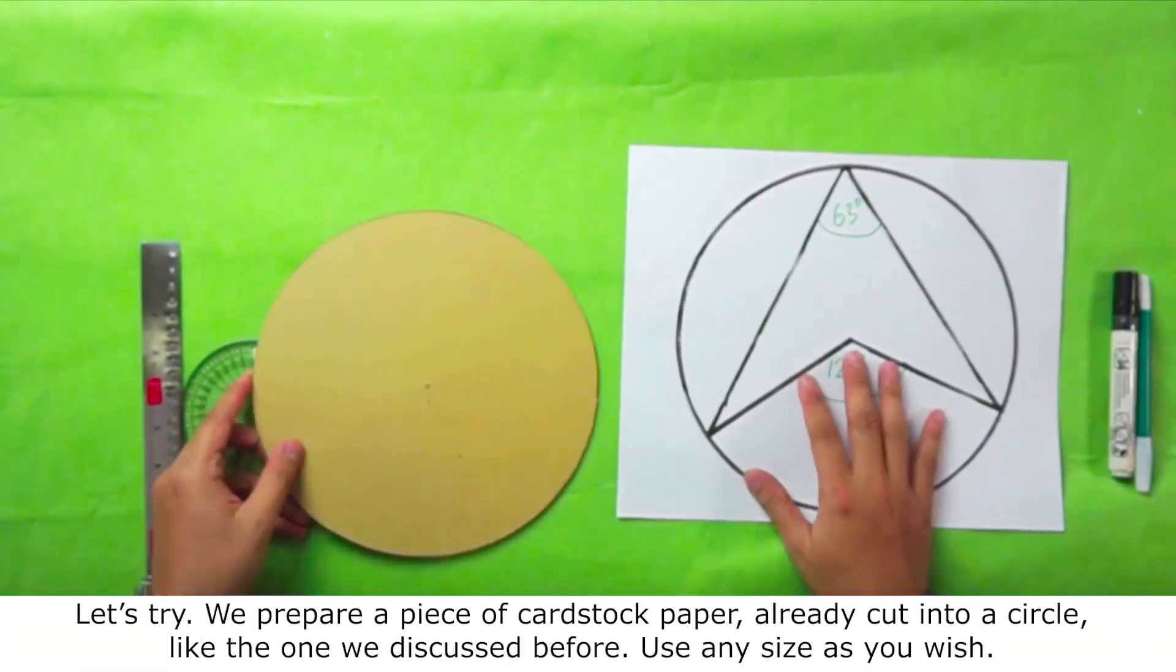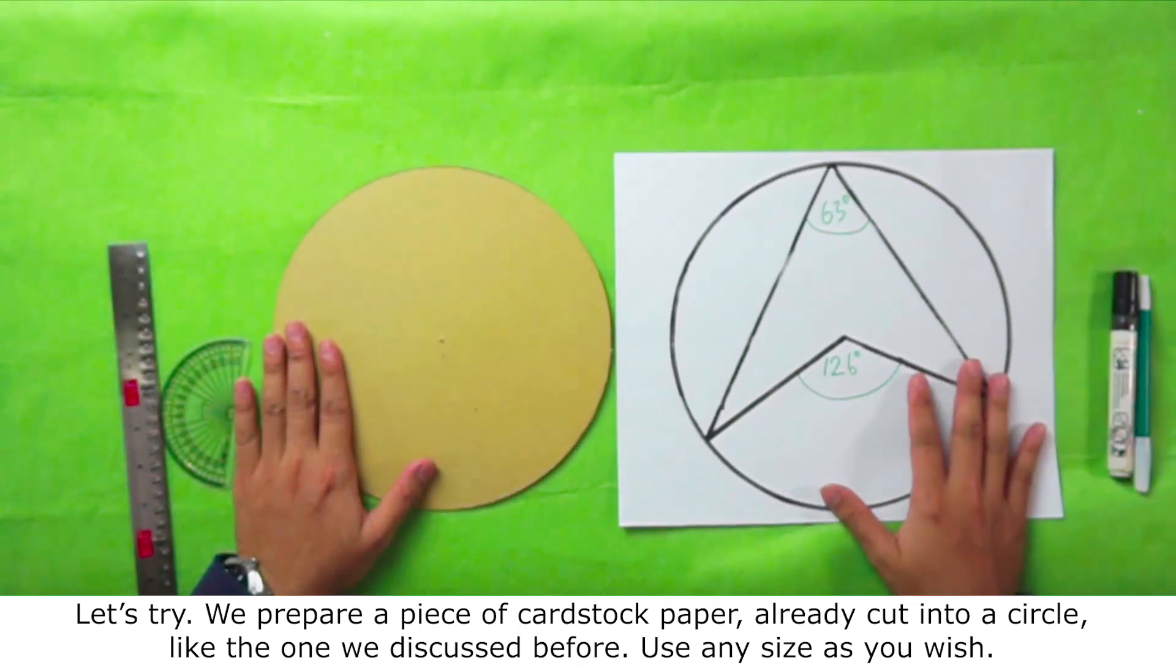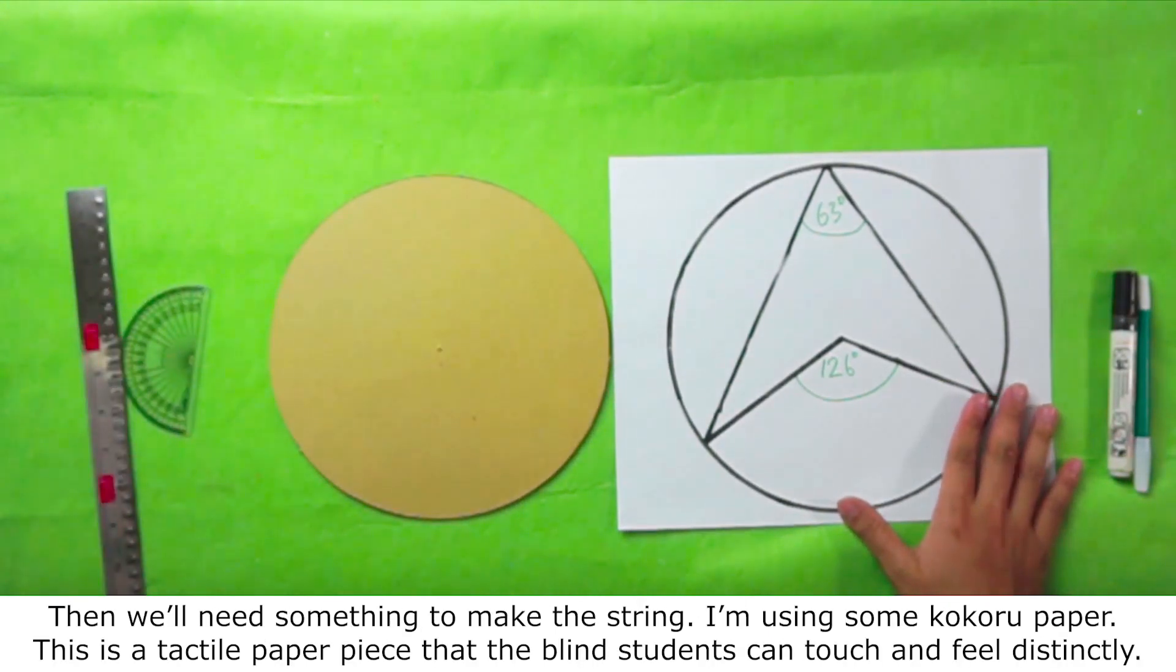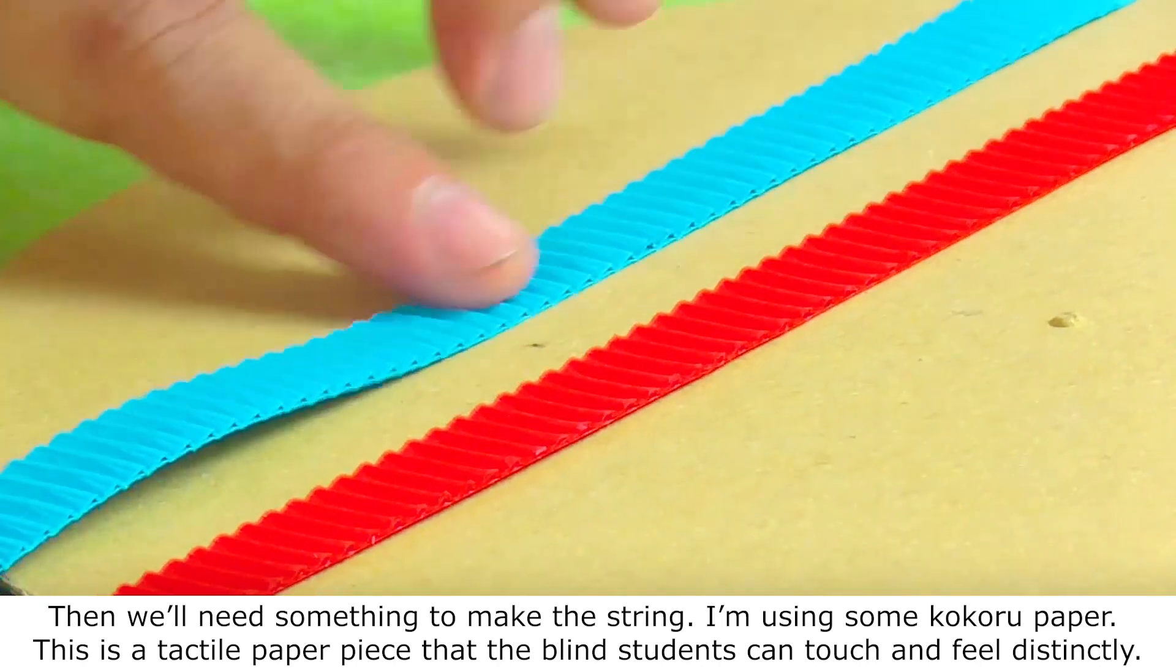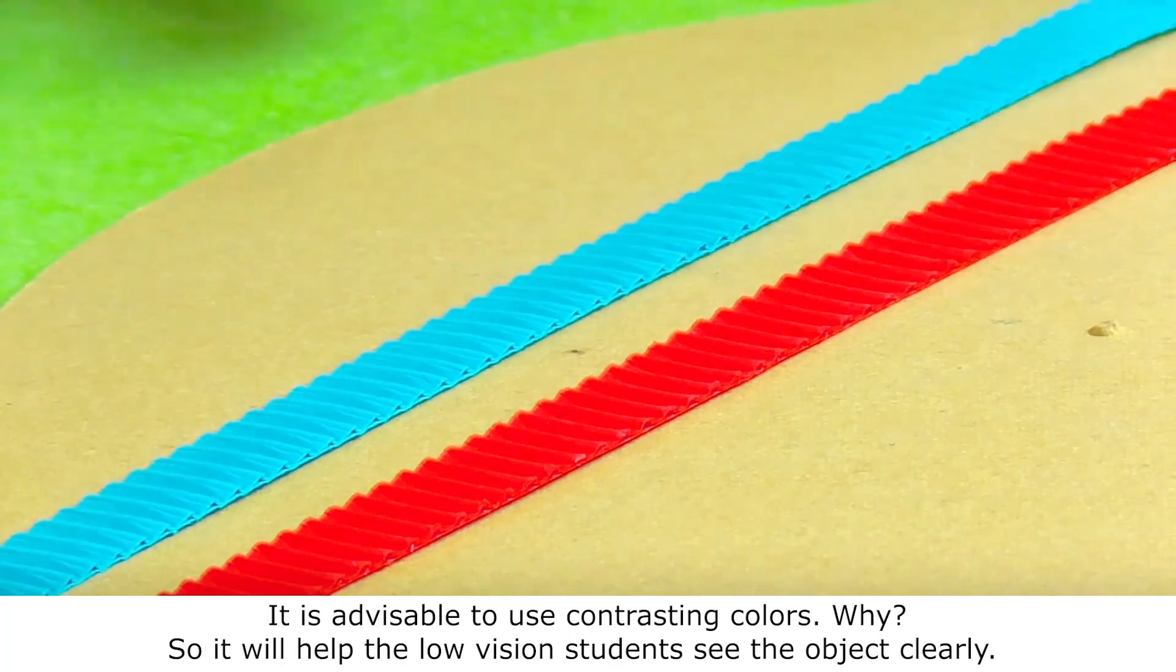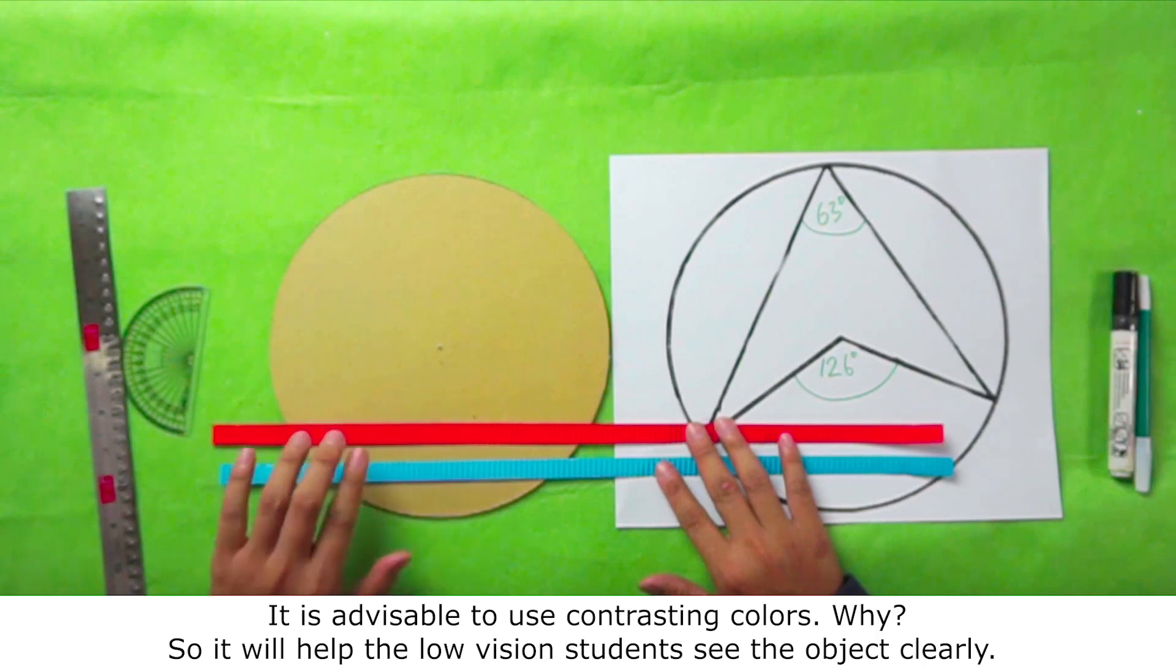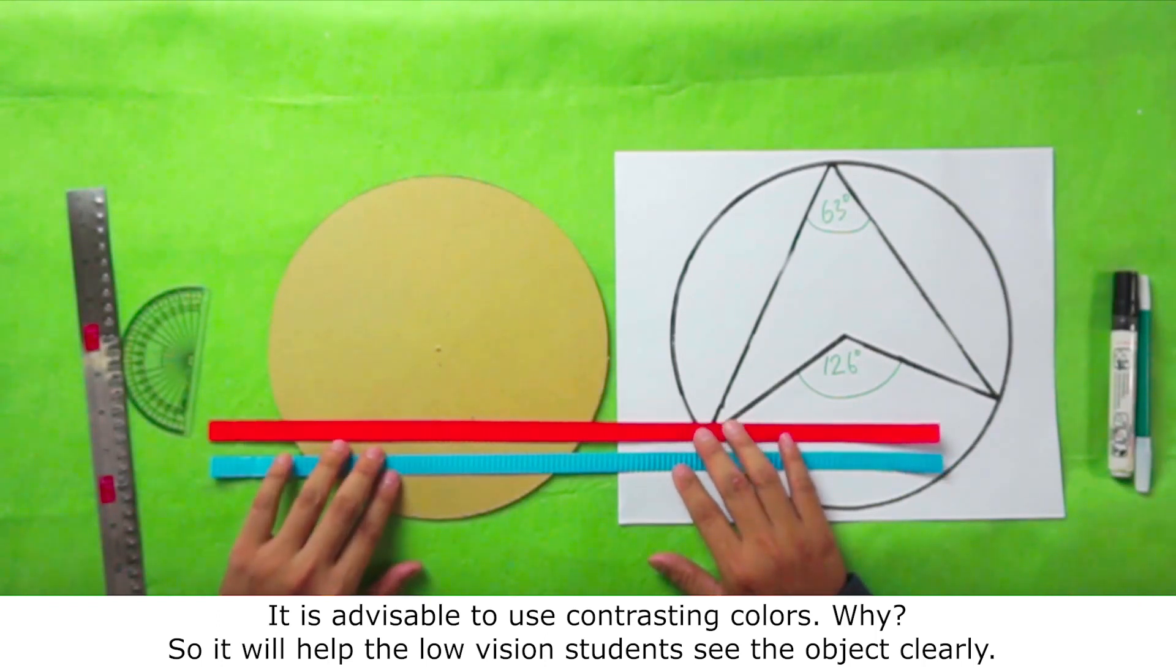Let's try. We prepare a piece of cardstock paper, already cut into a circle, like the one we discussed before. Use any size as you wish. Then we will need something to make the string. I'm using some kokoru paper. This is a tactile paper piece that the blind students can touch and feel distinctly. It is advisable to use contrasting colors. Why? Because it will help the low vision students see the object clearly.